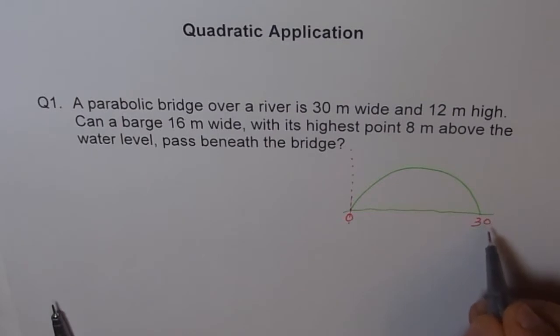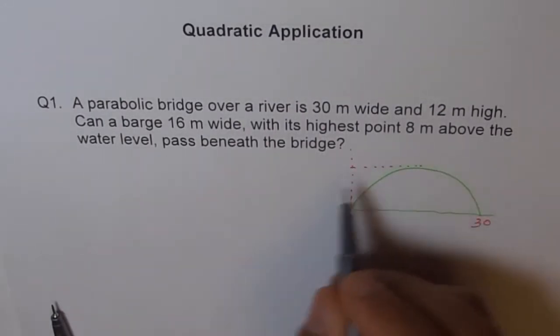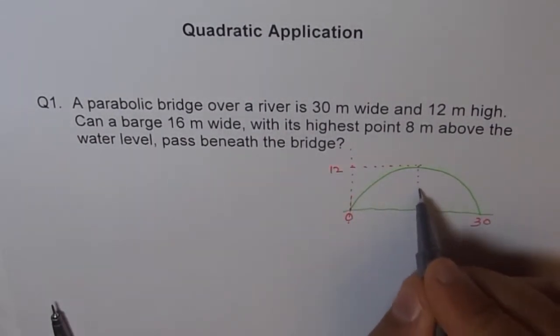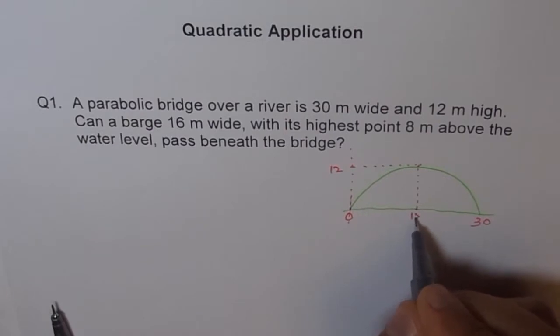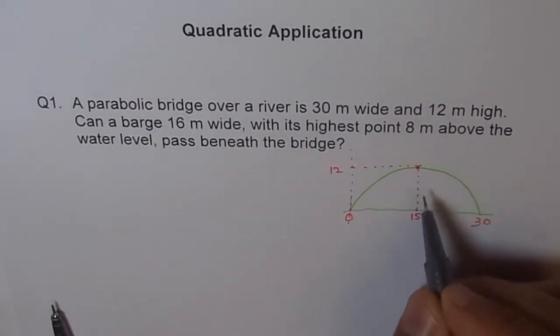This is 0 and this is 30. So this is 30 meters wide and 12 meters high. That means somewhere in the middle it should be 12. So the middle point is 15 for us. So that's my vertex, which is 15, 12.